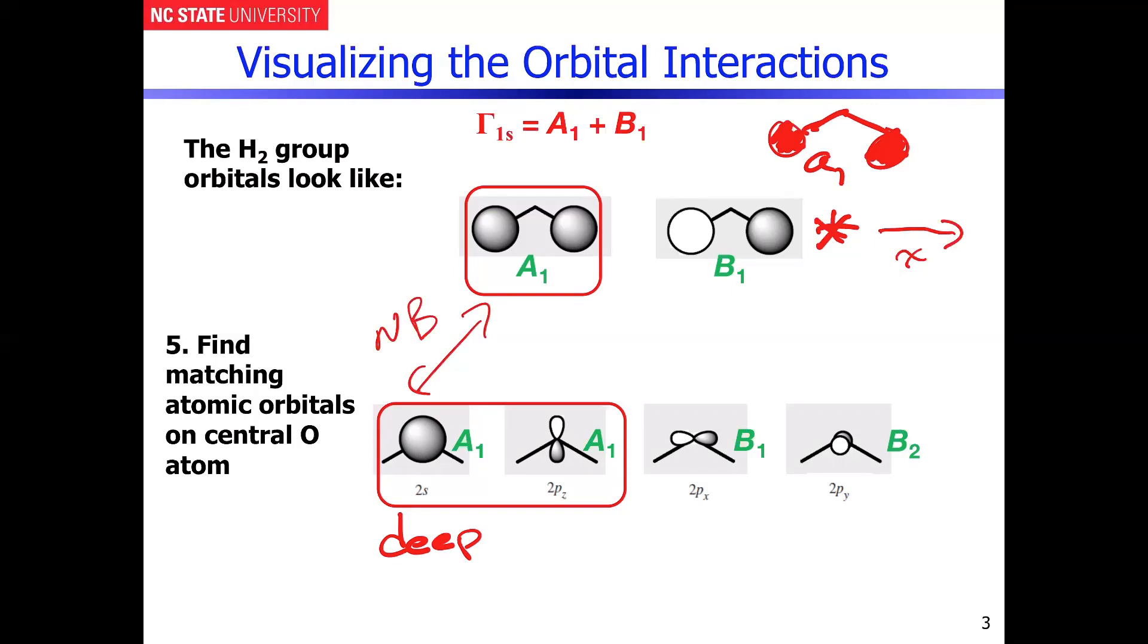Then the next combination here that you have to consider is going to be the 2PZ atomic orbital on oxygen matching up with the group orbital. That's the A1 group orbital from H2. And you can see that that's going to end up resulting in you're going to get a bonding and an anti-bonding combination from that. And that's again just the additive and subtractive combinations of those two components.